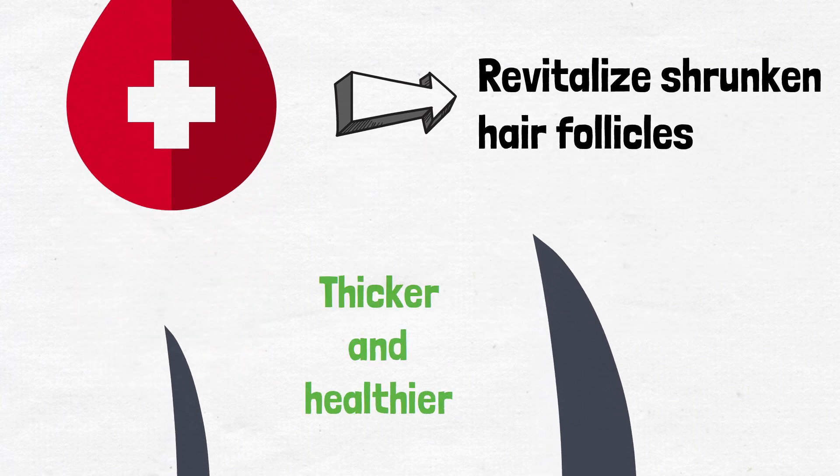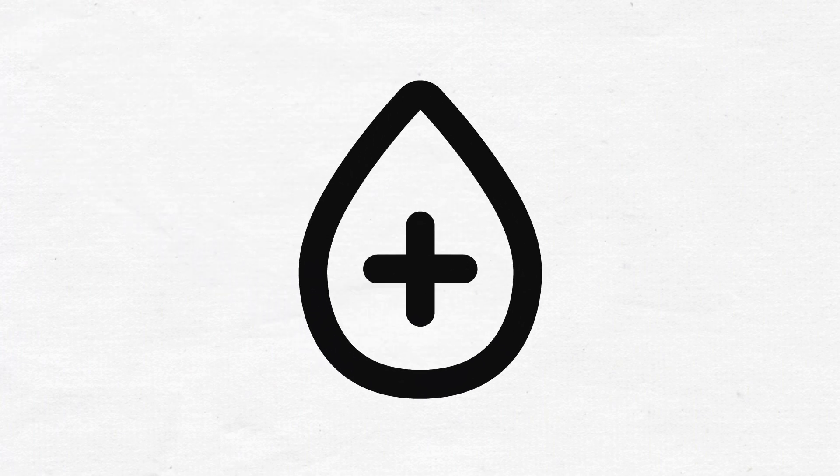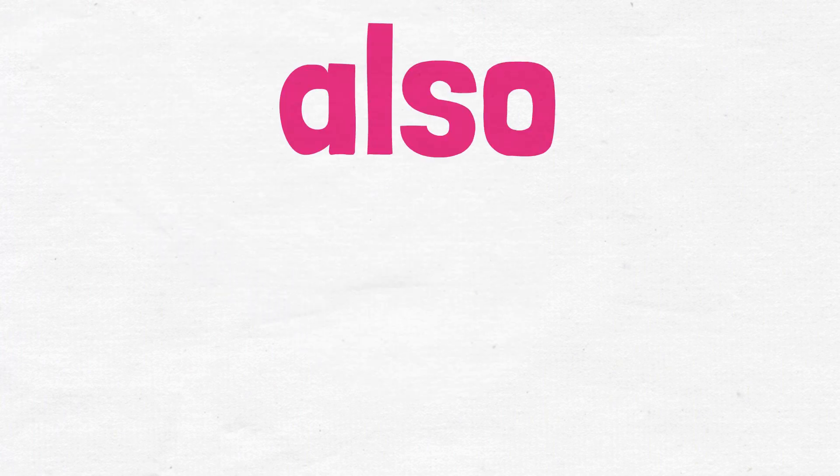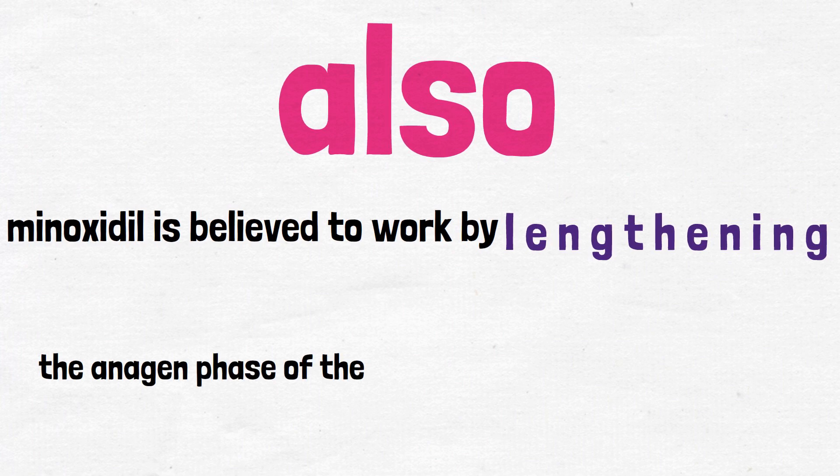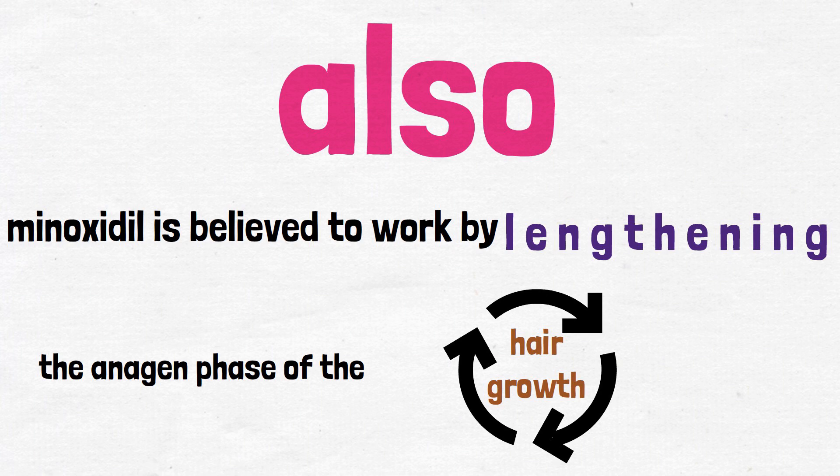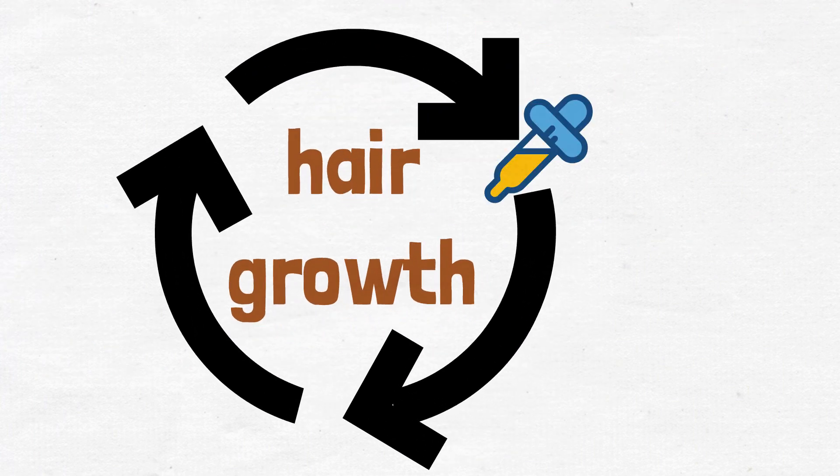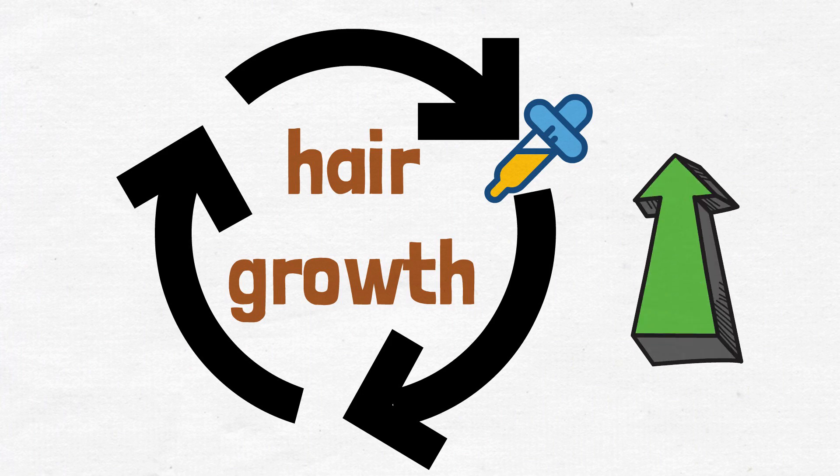In addition, minoxidil is also believed to work by lengthening the anagen phase of the hair growth cycle. The anagen phase is the active growth phase of the hair follicles, and by prolonging this phase, minoxidil can help to promote hair growth and prevent hair loss.